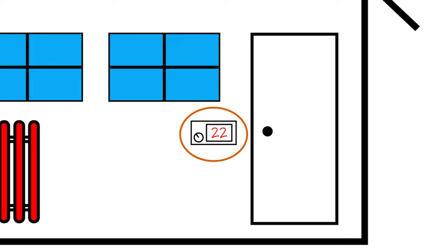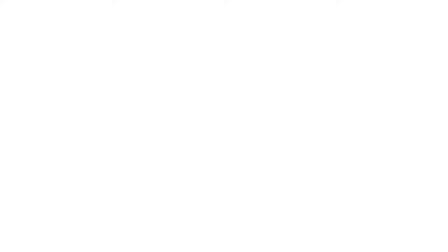What do these examples have in common? In each one, some component or components of the system have a directing influence that tends to drive a physical quantity, for example speed, water level, or temperature, to a pre-described value. The engineering definition of control is essentially the same as the dictionary definition, which states that to control is to exercise a restraining or directing influence over, or also to regulate, which is to govern or direct according to rule.